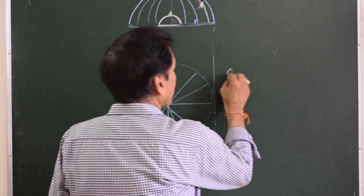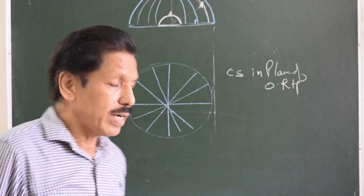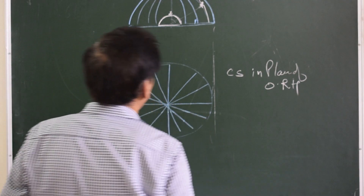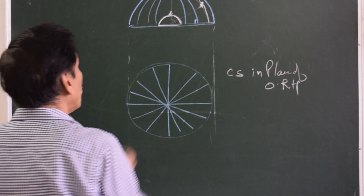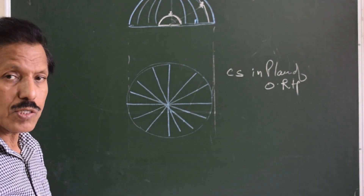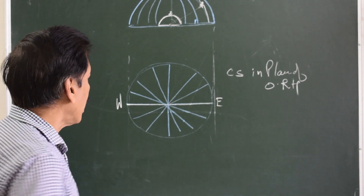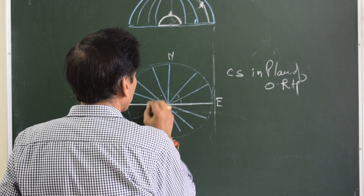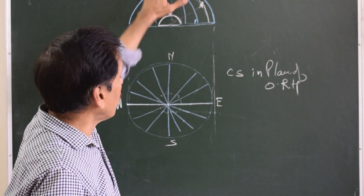This is the celestial sphere in the plane of the observer's rational horizon. Later on, when we do the calculations, you will find that this is one of the most important projections you will be studying. You are viewing the celestial sphere in the plane of the observer's rational horizon. You can assume you are lying down at the center of the earth viewing outside from there. If this is the east-west direction and this is the north-south direction, what you see in the center of the picture is the observer's zenith as well as the observer himself.